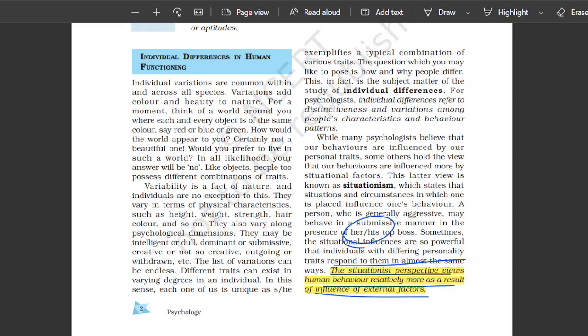So here what's important is that why are there psychological differences in human beings. For example there are variations that add color and beauty to nature. For the moment, think of the world around you. Where each and every object is the same color - red, blue, green - how would the world appear to you?